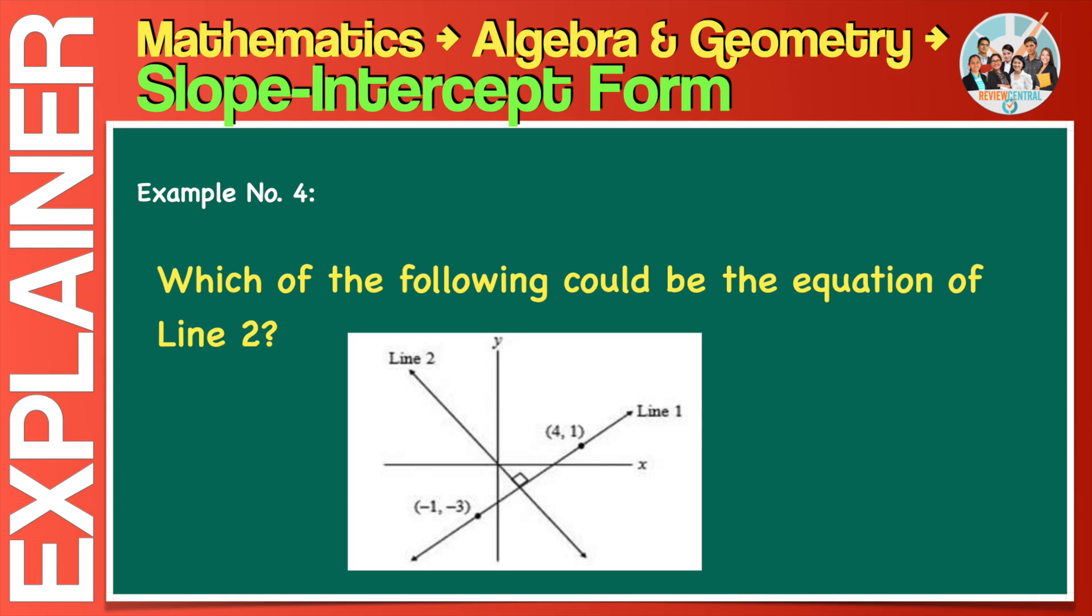Next is to determine the y-intercept of line 2. How do we do that? By looking at the figure. In the figure, it is very clear that line 2 crosses the y-axis at only one location, at y equals 0. So the y-intercept is 0. With m and b already known, the next step is to write the equation of line 2 in its slope-intercept form.